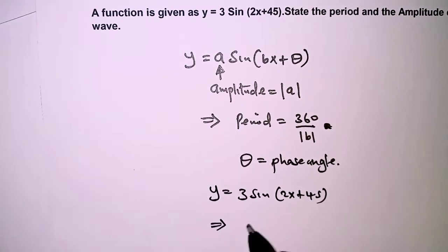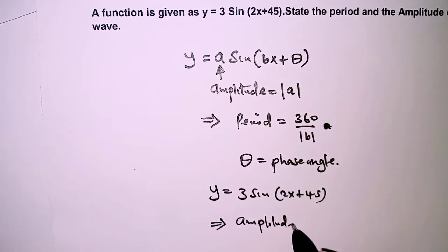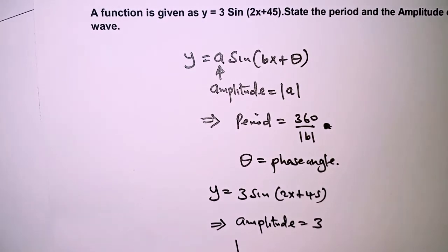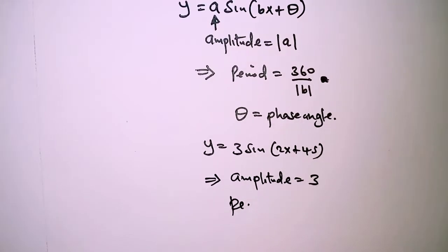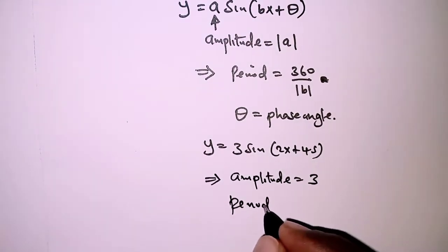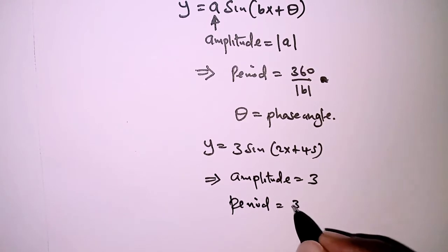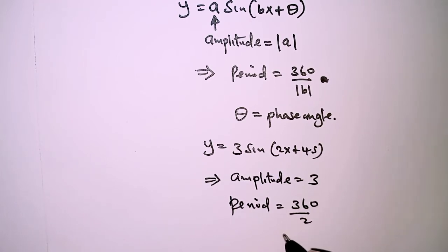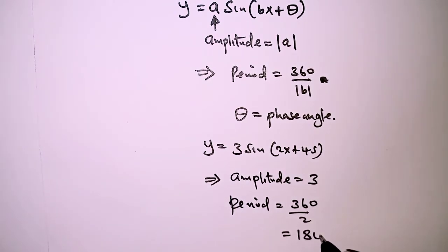So that simply implies that the amplitude is 3, and period is 360 over 2, and that is 180 degrees.